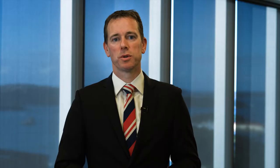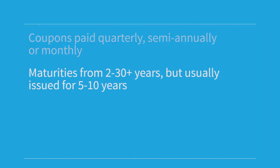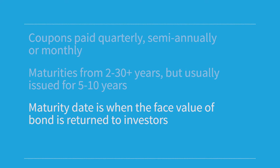Companies can issue bonds typically from anywhere from two years out to 30 years or even longer, but most bonds are usually issued in the five to ten year bracket. The maturity date is when investors can expect to receive their principal back, or their face value back on their bonds, and that is typically a set period of time.